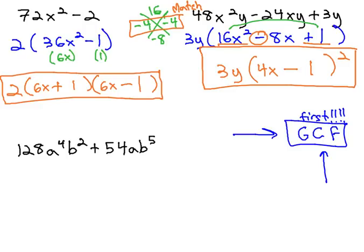Let's take a look at one more example, which requires us to do the GCF first. In this problem, we have 128 a to the 4th b squared plus 54 a b to the 5th. The greatest common factor here will be 2 a b squared. When we factor out the 2 a b squared, we're left with 64 a cubed plus 27 b cubed.